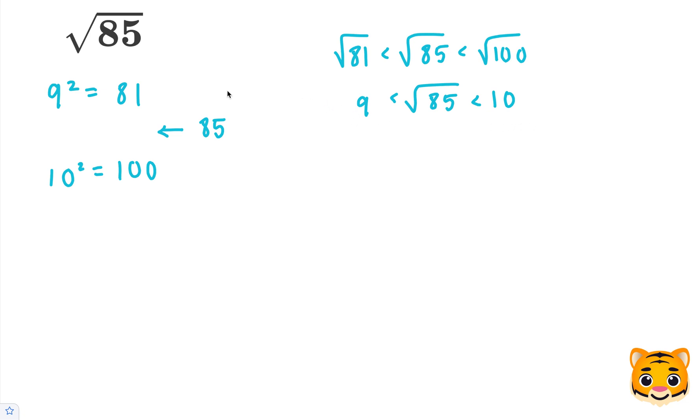However, it'll be closer to 9 because 85 is closer to 81 than it is to 100. Now let's try to estimate the values of the square root of 85 by looking at tenths place decimals between 9 and 10.